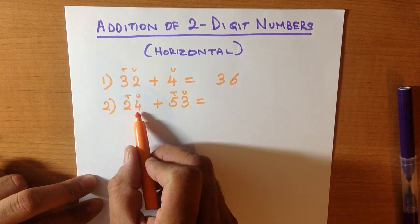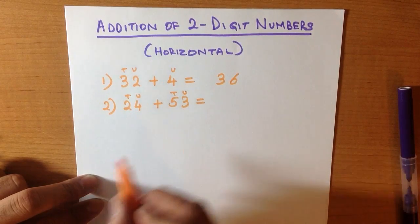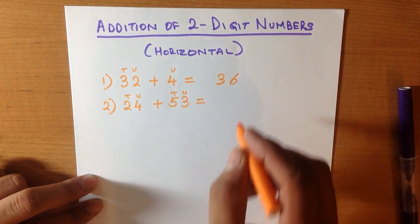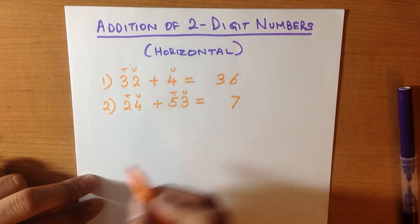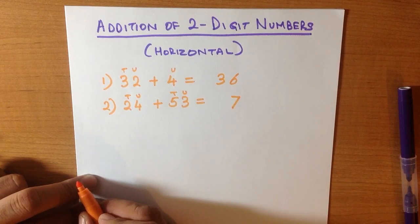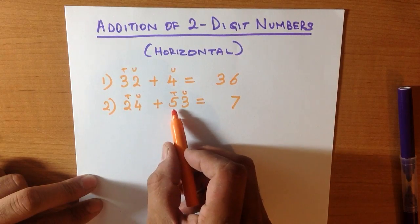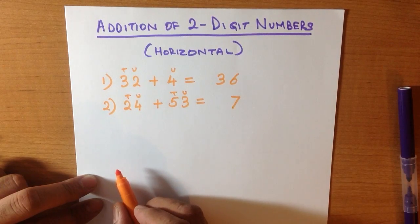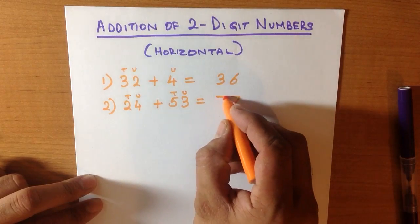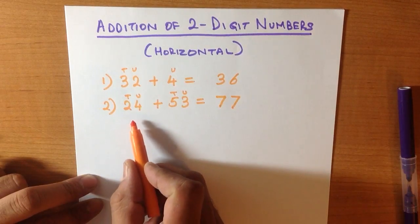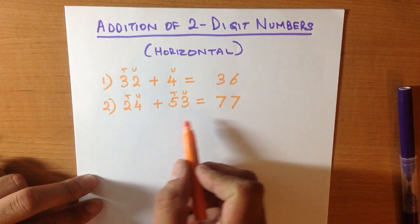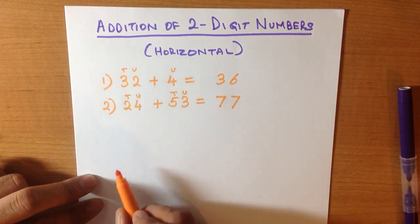So what is 4 plus 3? That's right, it's 7. Now we add the tens. What is 2 plus 5? That's right, that is also 7. So 24 plus 53 equals 77.